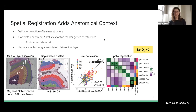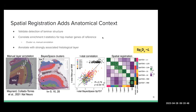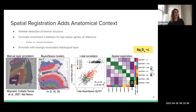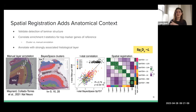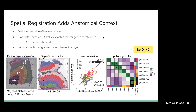Today I want to talk specifically about how to do this spatial registration. Is the underlying clustering K-means or nearest neighbor? I'm not going to talk about clustering today — it uses BaySpace. I'll get back to you on the exact algorithm.